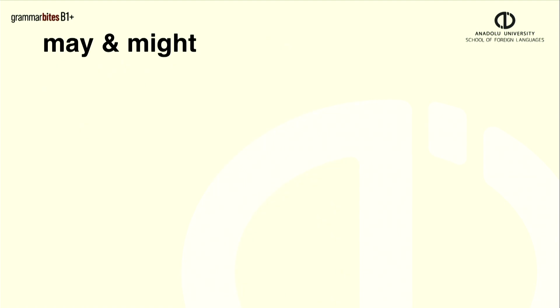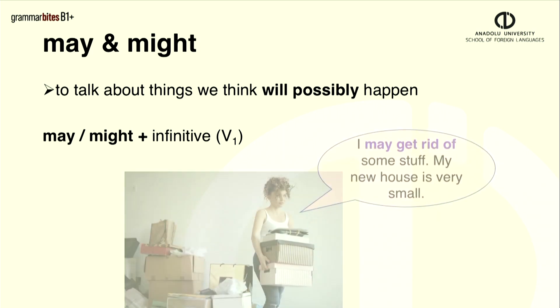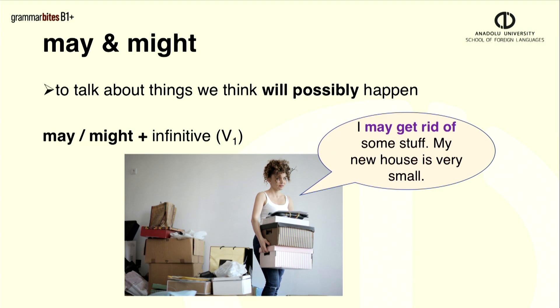May and might both show possibility in the future. There is a 50% chance that something will happen. We use verb one after may or might. This girl considers getting rid of stuff before she moves to her new house. And she says, I may get rid of some stuff. My new house is very small. She may do it or she may not.